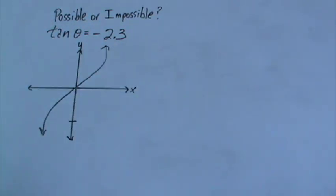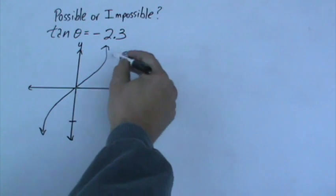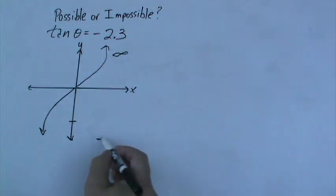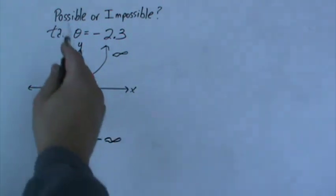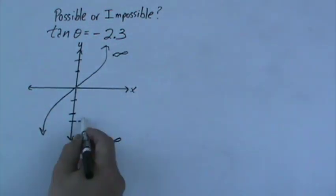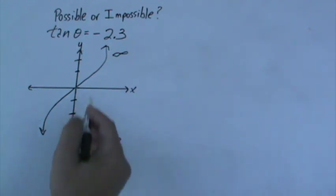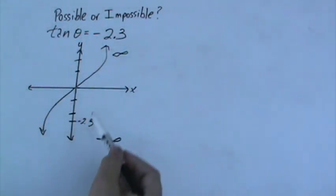Then we should be looking at how high and how low this tangent goes. So it goes high, it goes forever, right? So it goes to infinity. And then down here it goes to negative infinity. And then you just have to ask where would tangent of theta be negative 2.3 on the graph? Right here. So since this graph goes down to negative infinity, then tangent of theta of negative 2.3 is possible.